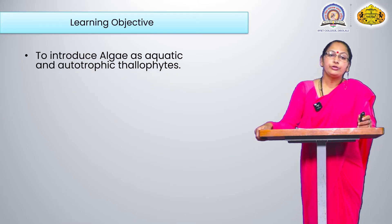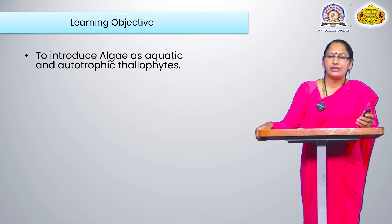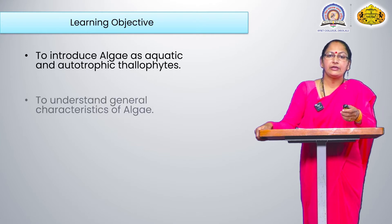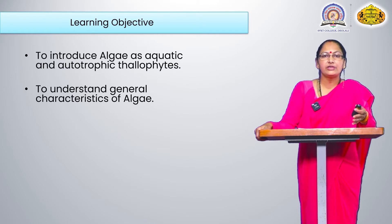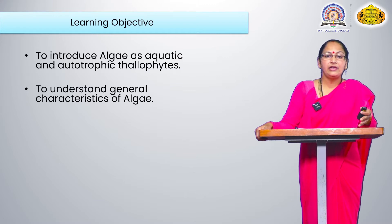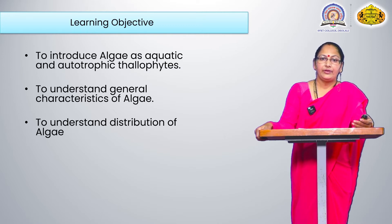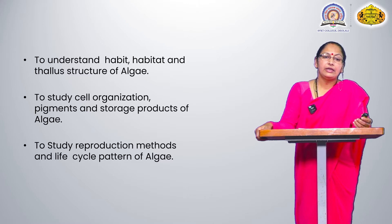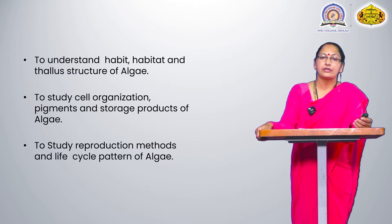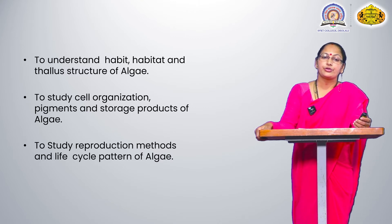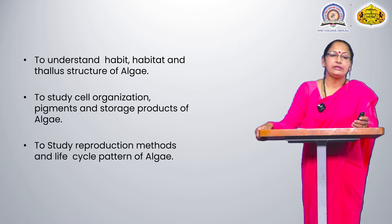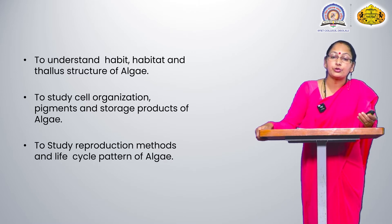The learning objectives are: to introduce algae as aquatic autotrophic thallophytes — these forms are present in water, and autotrophic means food is prepared by themselves. To understand the general characteristics of algae, to understand the distribution of algae, and to understand the habit, habitat, and thallus structure of algae. Also, to study the cell organization, pigments, and storage products of algae.